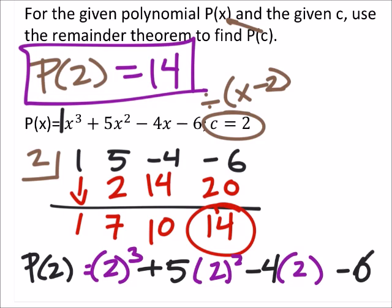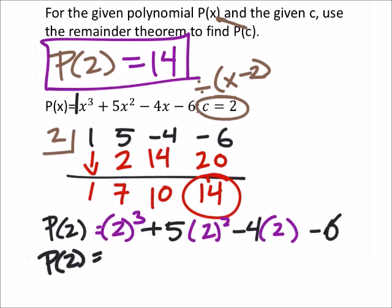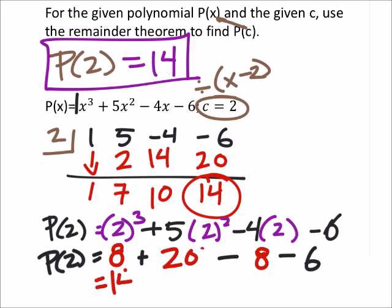If we do this, then we should get 14, right? So, let's see what that gives us. So, 2 cubed is 8. Then I've got plus 5 times 2 squared, which is 4, and then minus 4 times 2, which is 8, and then minus 6. So, 5 times 4. Let's just go ahead and do that right now. 5 times 4 is 20. So, 8 plus 20 minus 8 minus 6, and that does indeed give us the 14.